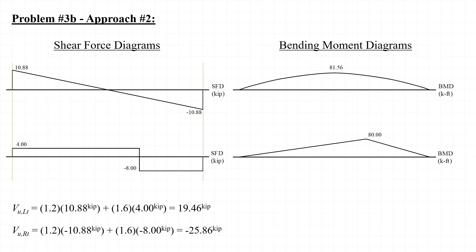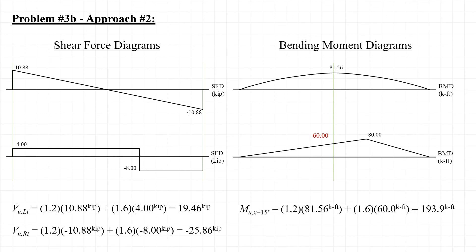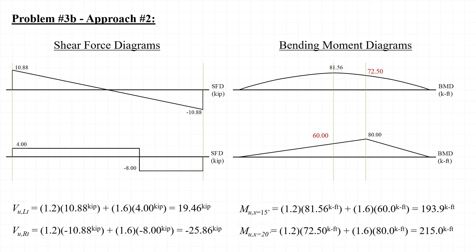For the bending moments, we observe that the maximum dead load moment occurs at a different location than the maximum live load moment. Evaluating the load combination at mid-span, we calculate the live load moment at that location using similar triangles, finding it equals 60 kip-feet, giving M sub U equal to 194 kip-feet at mid-span. Considering the bending moments under the point load, we determine the dead load moment at that location and apply the load factors, again finding that M sub U equals 215 kip-feet at the point load location.